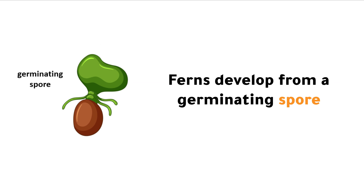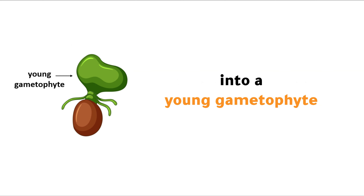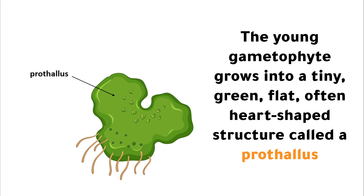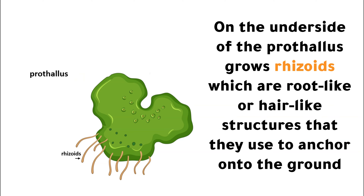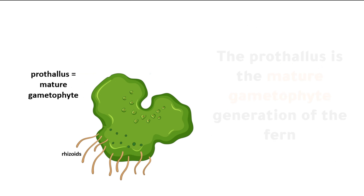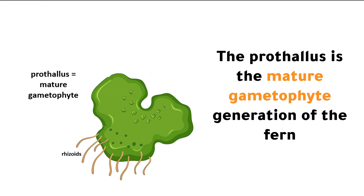Let's start the discussion of a fern's life cycle with a spore. Ferns develop from a germinating spore into a young gametophyte. The young gametophyte grows into a tiny, green, flat, often heart-shaped structure called a prothalus. On the underside of the prothalus grows rhizoids, which are root-like or hair-like structures that they use to anchor onto the ground. The prothalus is the mature gametophyte generation of the fern.